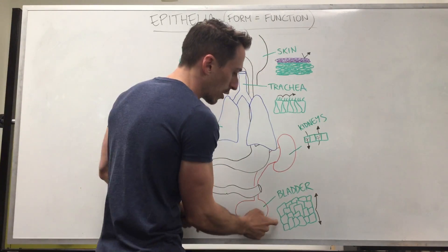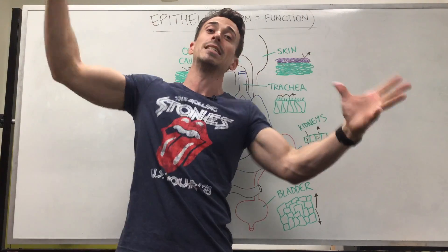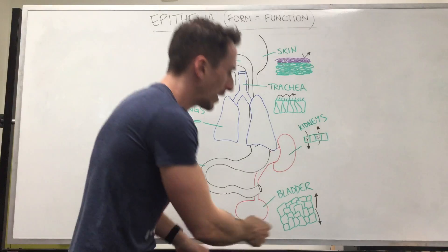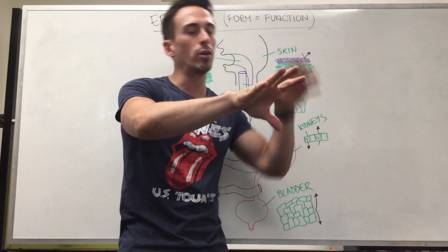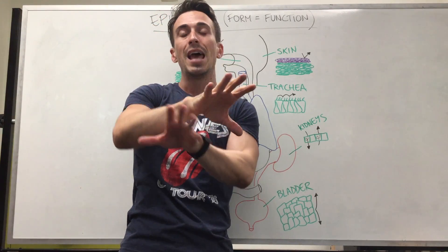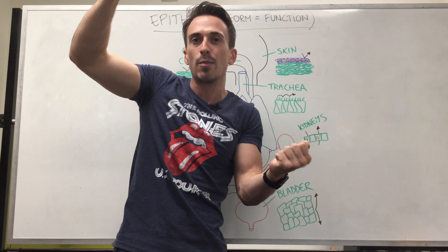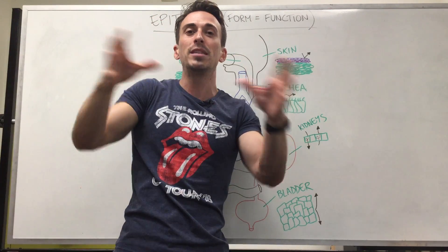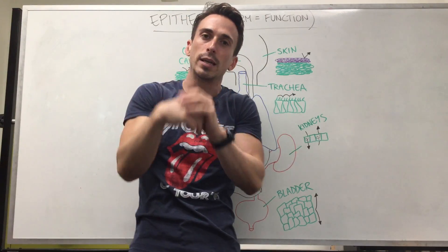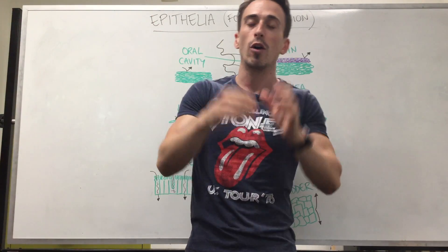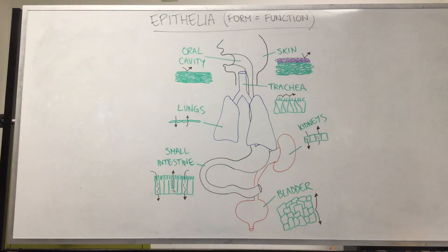The last one is the bladder. The bladder needs to distend and snap back into place, so it has what we call transitional epithelia. That means it may be cuboidal, columnar, or squamous, so that when it stretches the tissue doesn't get damaged. Having many different cell types means it can change shape quite easily — stretch and snap back into place. This has been a quick run through of the epithelial tissue types.